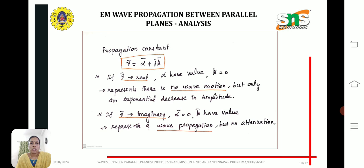Here the propagation constant gamma equal to alpha plus j beta. If gamma is real, alpha has value and beta equal to 0, meaning there is no wave motion but only exponential decrease in amplitude. If gamma is imaginary, alpha equal to 0 and beta has value, representing wave propagation but no attenuation.